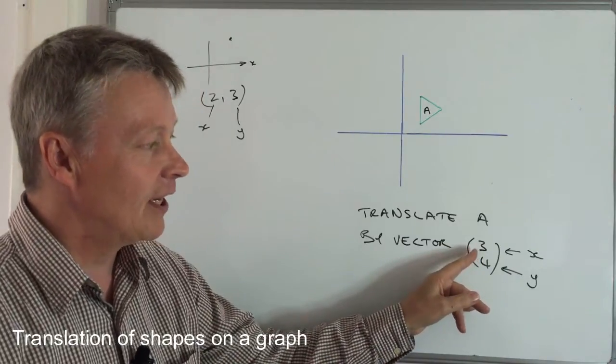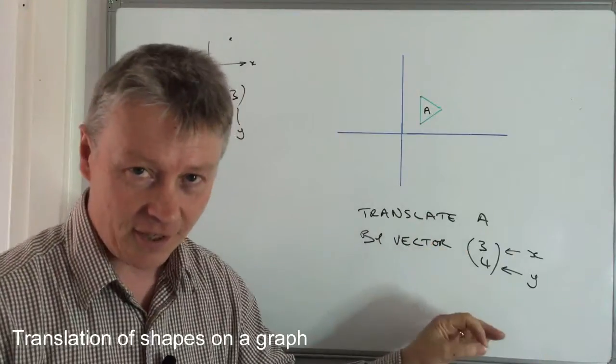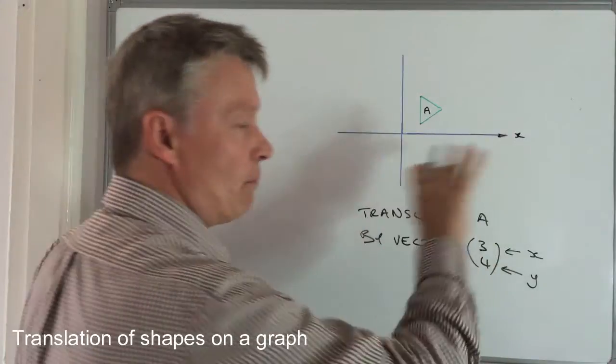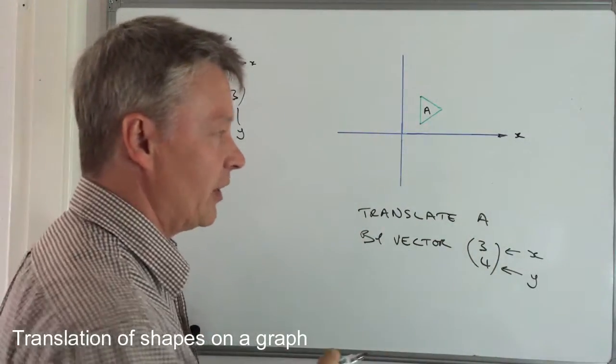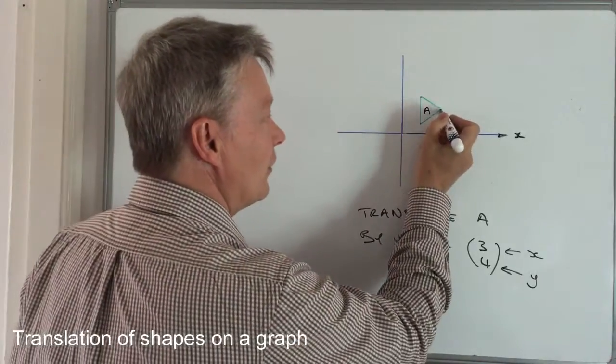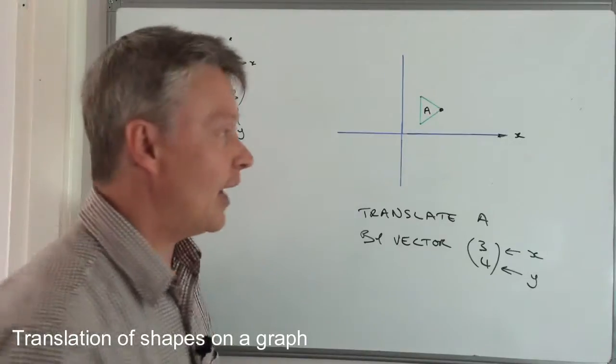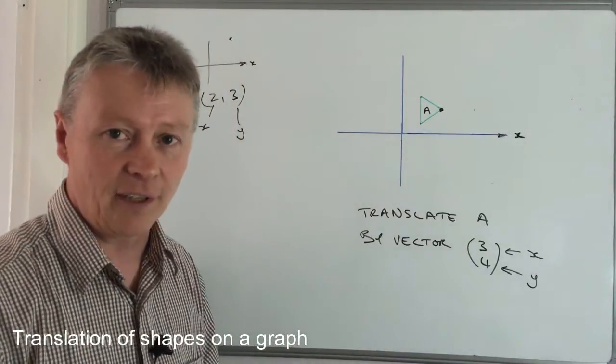So in this particular one, it's telling me to move this shape A along the x-axis towards the right, which is the positive direction, by 3 units. Now, the easiest way of doing that is to take one of the points and simply look at the graph and read through the graph and move it along 3 places, and you'll get to something like there.